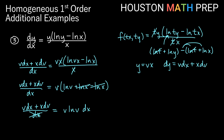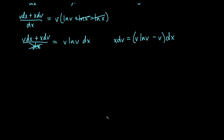Multiplying dx to the other side: v dx plus x dv equals v ln v dx. Subtracting v dx from both sides: x dv equals (v ln v minus v) dx. Dividing by x and by (v ln v minus v), we get dv over (v ln v minus v) equals dx over x.